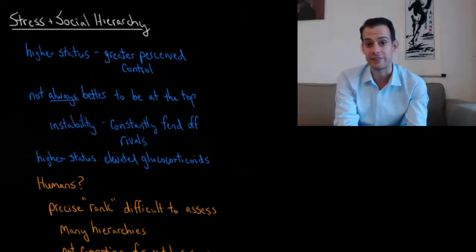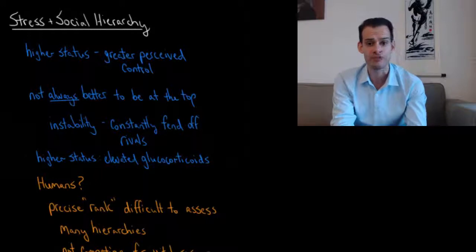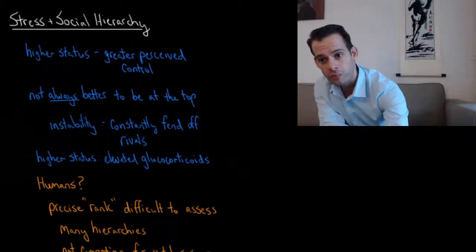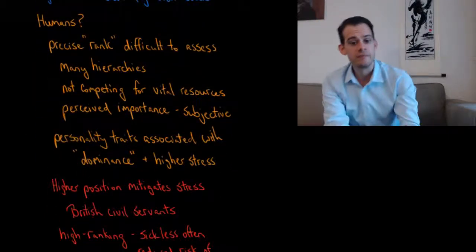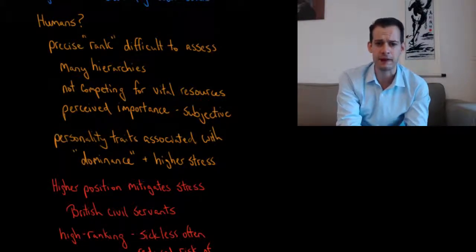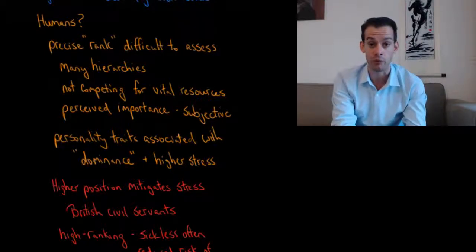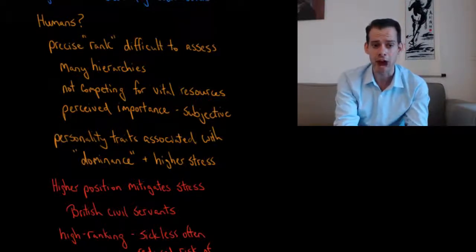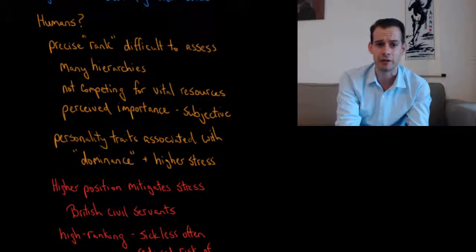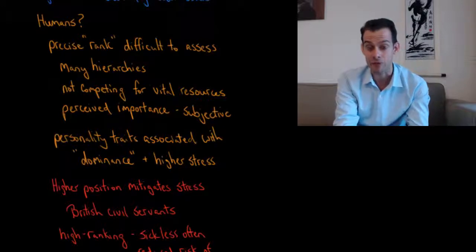Of course being at the bottom of a hierarchy isn't very good either and can be associated with elevated glucocorticoids. So how do we apply this to humans? It's difficult because humans are members of many different hierarchies, so it's difficult to come up with a precise ranking for each individual. We don't have a single pecking order, and many hierarchies we're in aren't about competing for vital resources like food, so our perceived importance of hierarchies starts to matter and is subjective.